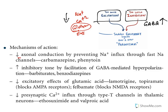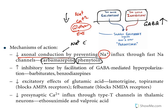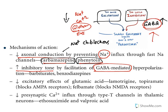The first mechanism is to reduce axonal conductance by preventing sodium influx through sodium channels. The example drugs are carbamazepine and phenytoin — these are CNS sodium channel blockers. The second mechanism is to increase the inhibitory tone by facilitation of GABA-mediated hyperpolarization, literally enhancing CNS inhibition. Example drugs are barbiturates and benzodiazepines.